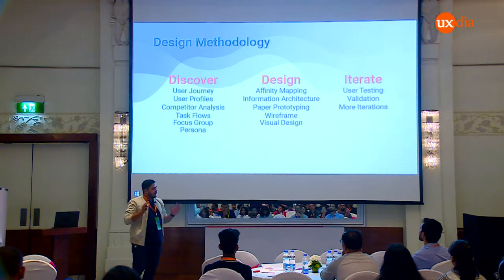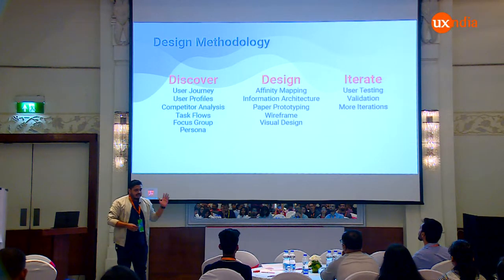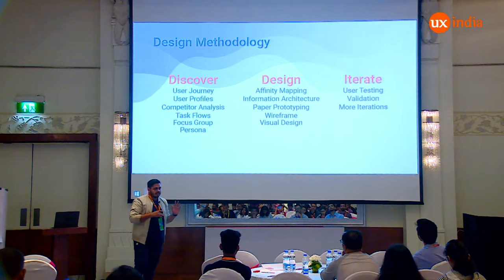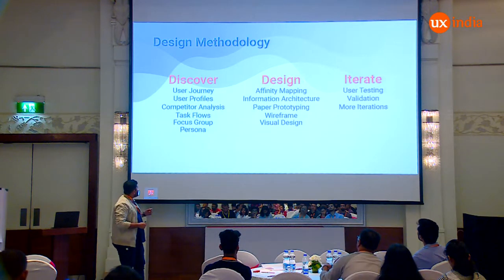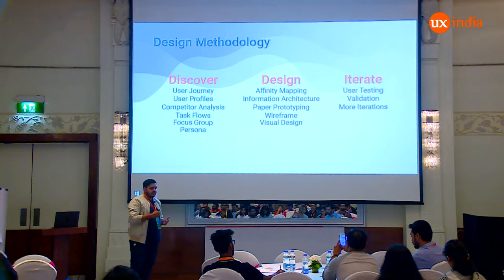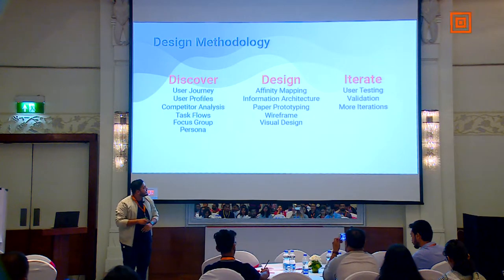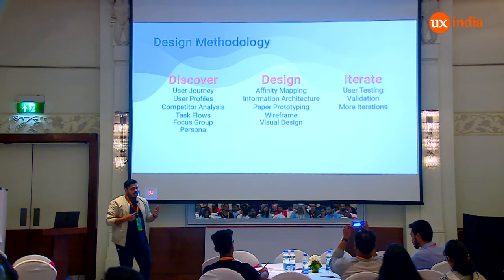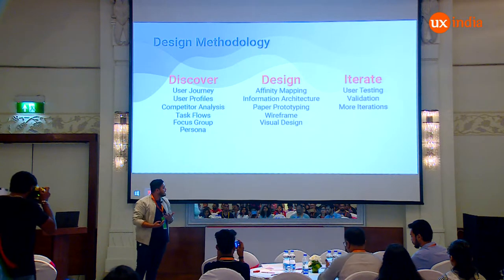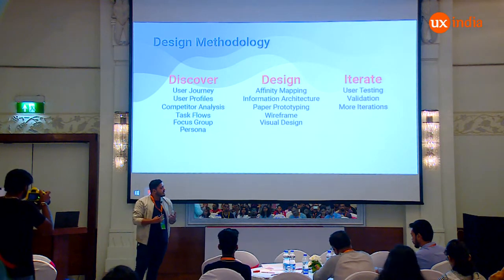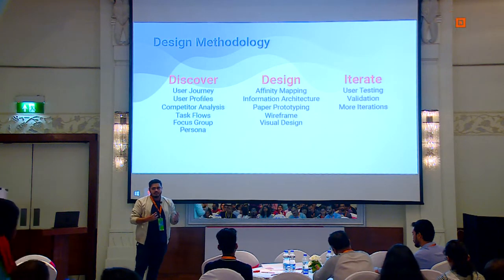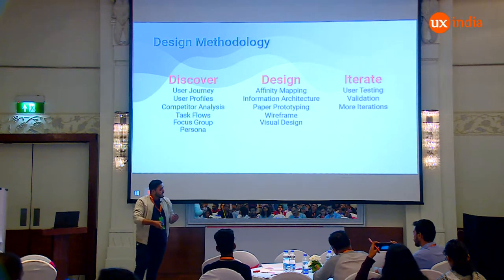We broadly segregated our process into three steps: the discover phase, the design phase, and the iterate phase. Today I'm going to be focusing mostly on the discover phase, because that's where we got most of our insights from. In the discover phase, we did user journeys, user profiles, competitor analysis, task flows, focus groups, and personas. In the design phase, we worked on affinity mapping, information architecture, paper prototyping, wireframing, and visual designing. During the iteration phase, we went back to the users, talked about it, and conducted a couple of focus groups to see how it could help us.